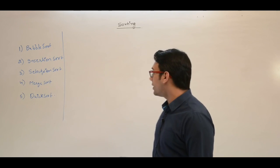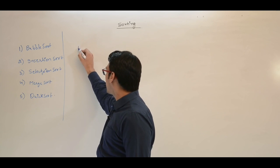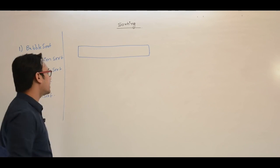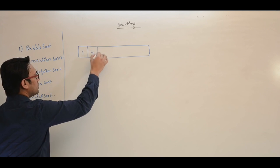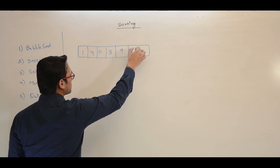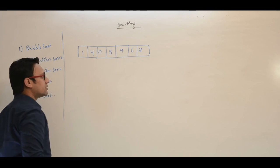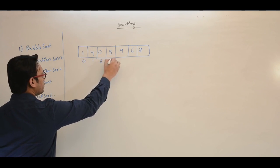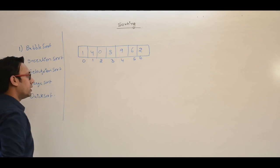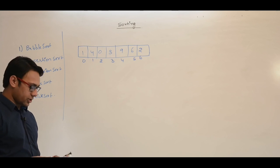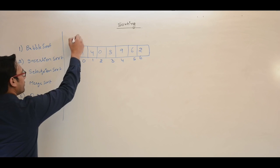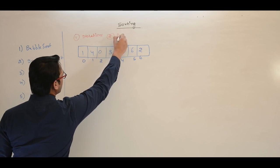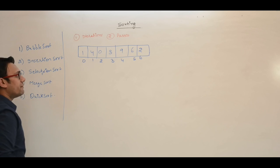What is bubble sort? Assume we have the following array containing the data: 1, 4, 0, 3, 9, 6, and 2. The index locations are 0 through 6. In bubble sort, we have two things: iterations and passes. In every pass, we have some iterations.